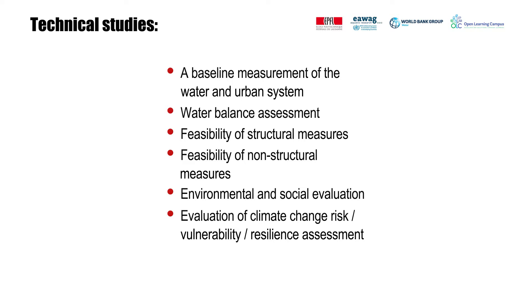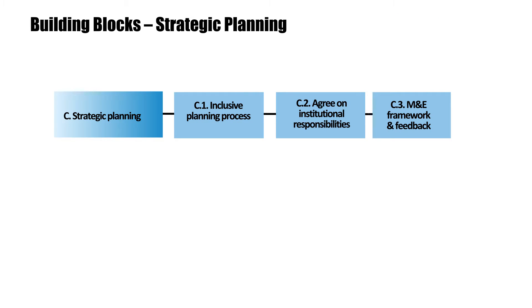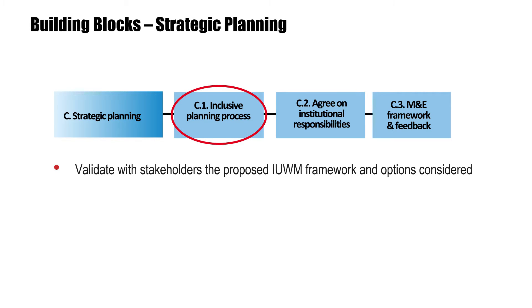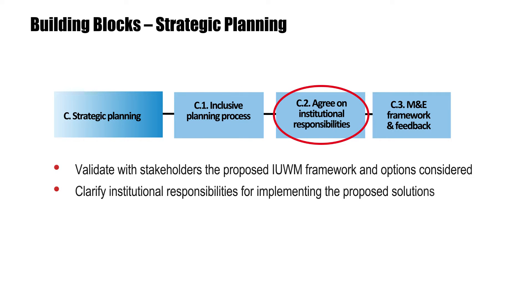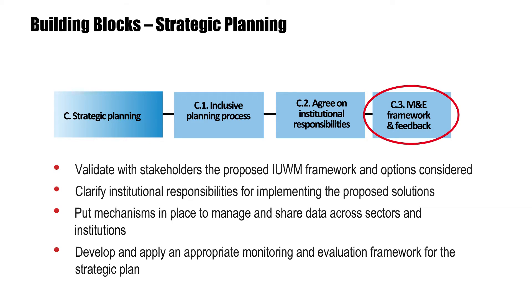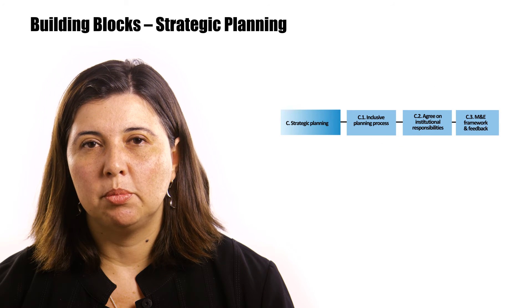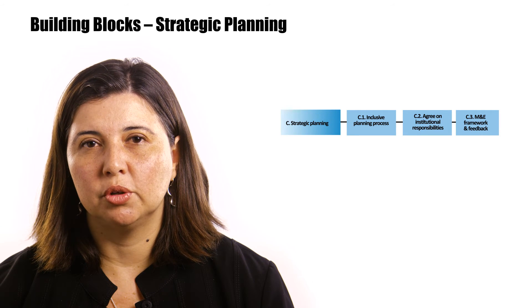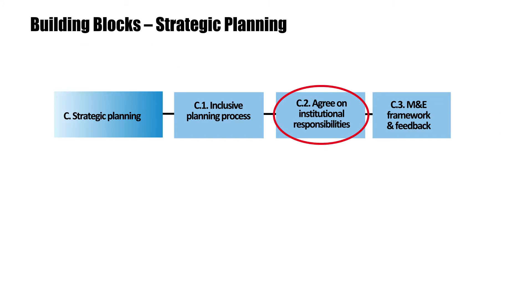A number of technical studies will be required to inform the next phase of strategic planning. The objectives of the strategic planning phase are to validate with stakeholders the proposed IUWM framework and options considered, clarify institutional responsibilities for implementing the proposed solutions, put mechanisms in place to manage and share data across sectors and institutions, and develop and apply an appropriate monitoring and evaluation framework for the strategic plan. Once stakeholders have decided to move forward with an IUWM approach, a vision can be developed for the long-term integration of urban water management in the city, including agreement on proposed outcomes, institutional responsibilities and cost-sharing arrangements, milestones and a monitoring framework, and mechanisms for review, feedback, knowledge management, and course correction.